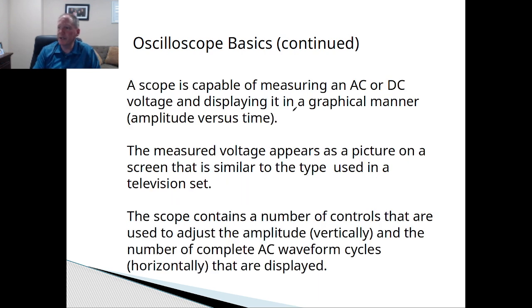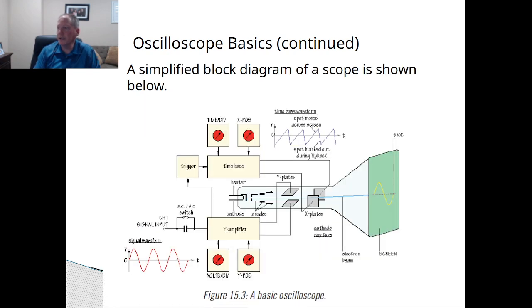Now it can measure both AC or DC and the measured voltage is a picture. It's a graphic on the screen and on the inside of it, if you were to look inside of an oscilloscope, here's the block diagram of the scope where it has a CRT, right?